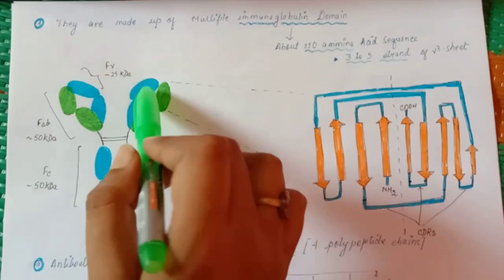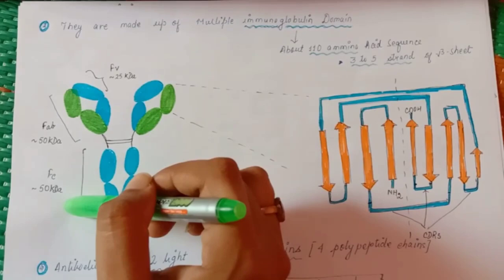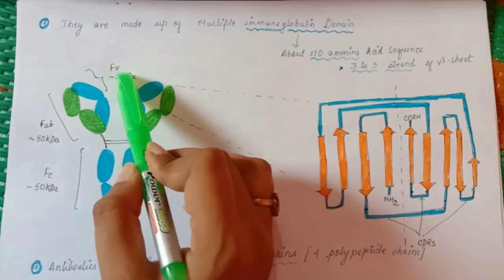We have FAB portion which is about 50 kilodalton. We have FC portion that is 50 kilodalton. This FAB is the fragment of antibody. This consists of constant and the variable region. This variable region is approximately 25 kilodalton.